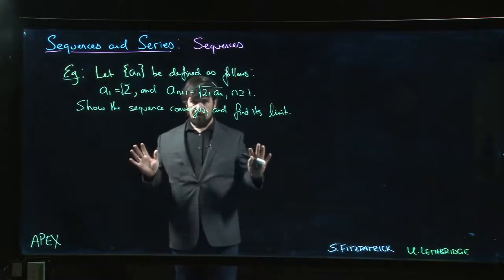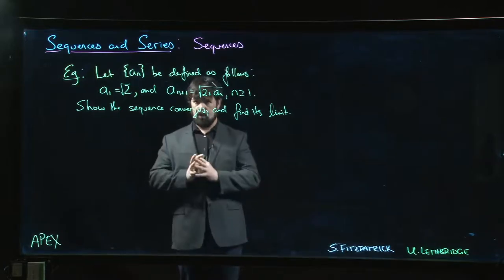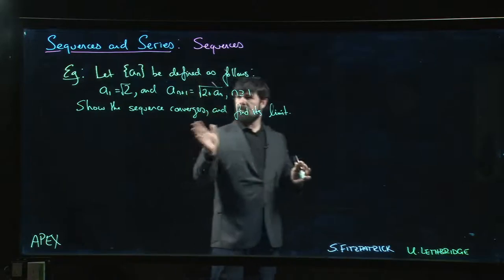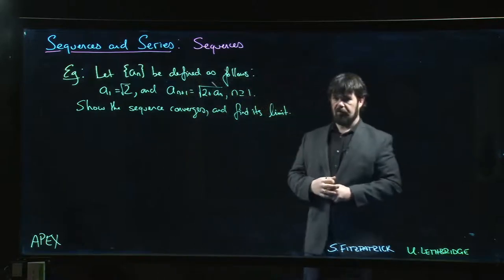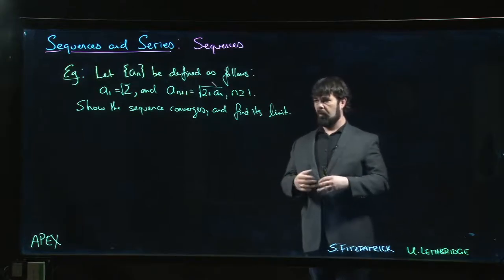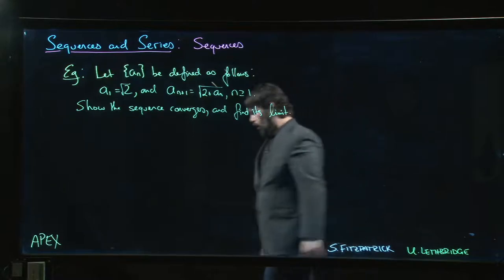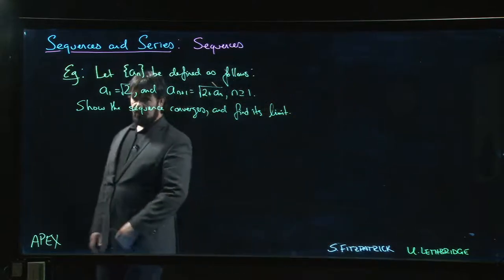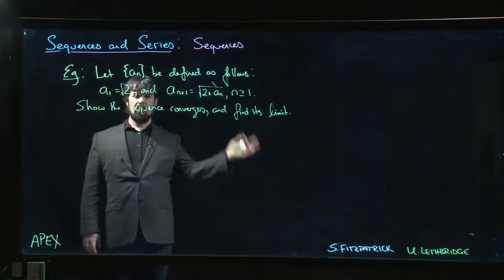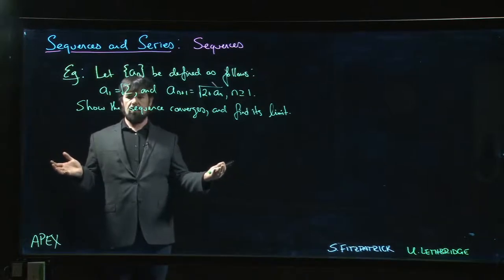We're pretty much done with sequences and ready to move on to series, but first I want to show one more slightly more challenging example. This sequence is defined recursively — we don't have a formula like a_n equals some function of n. A lot of the time we can fall back on calculus techniques, but here we can't since it's defined recursively.